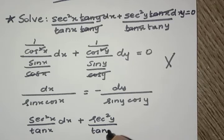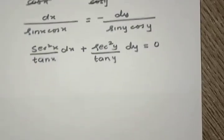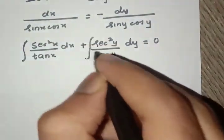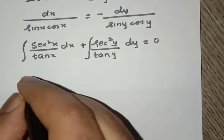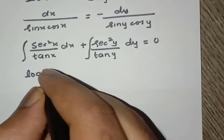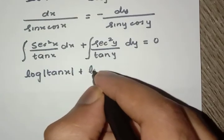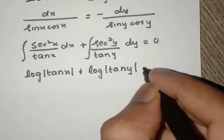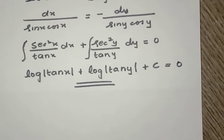Now if we integrate both sides, we get log mod tan x plus log mod tan y plus C equals zero. So this is our answer.